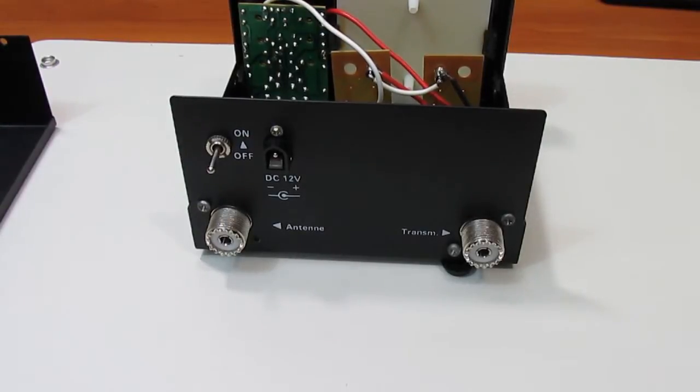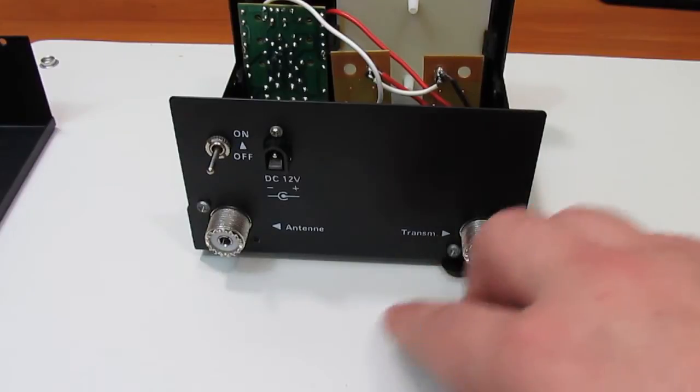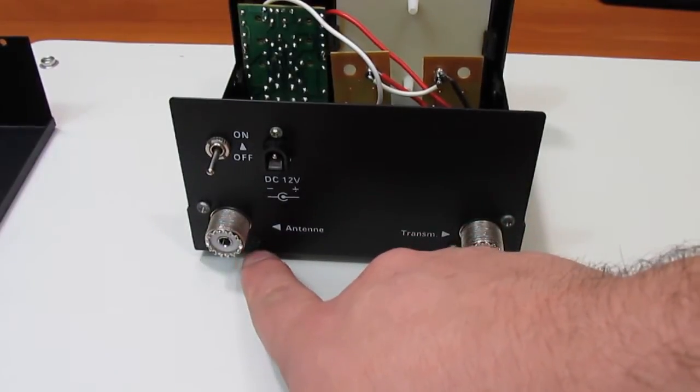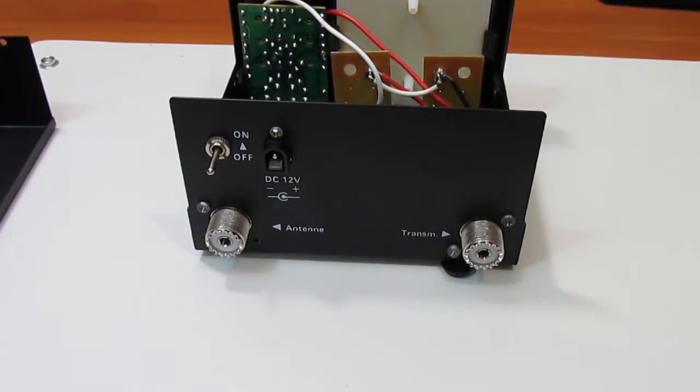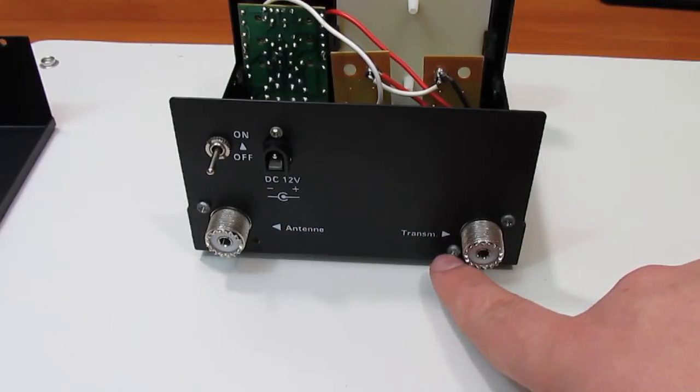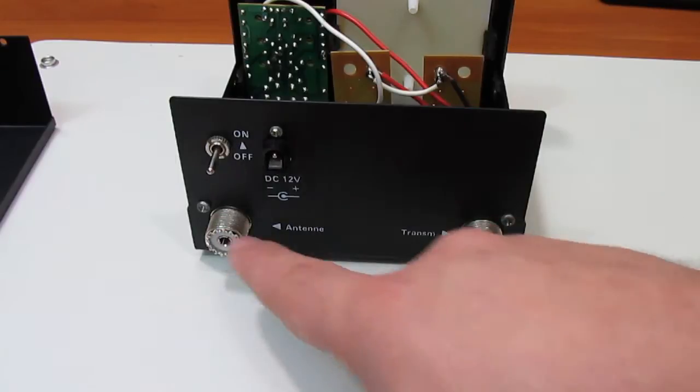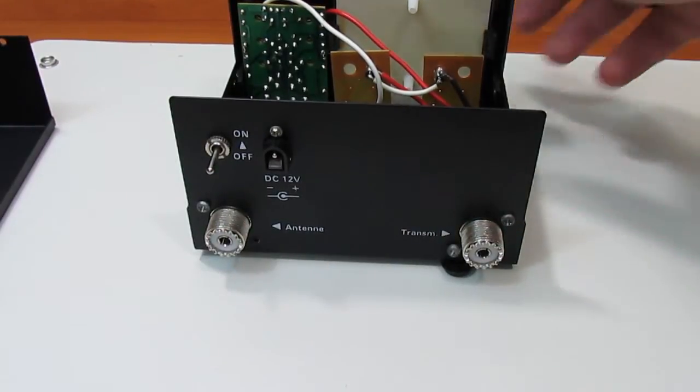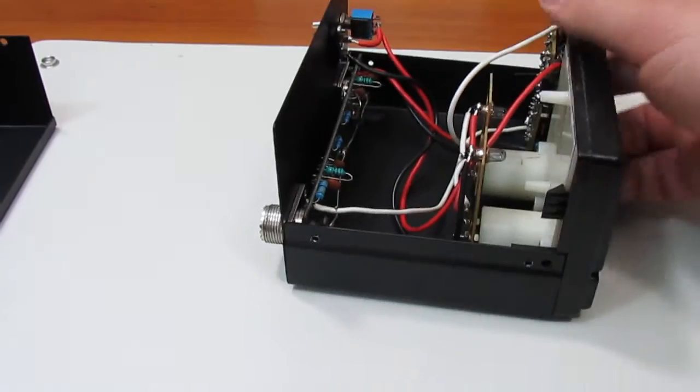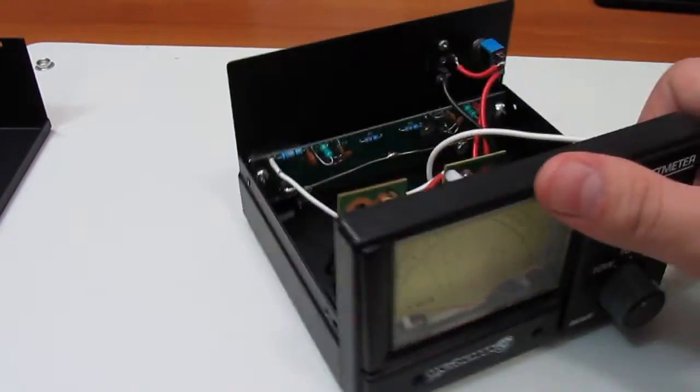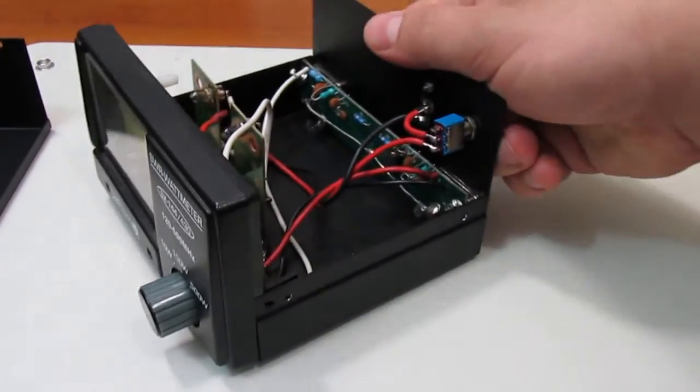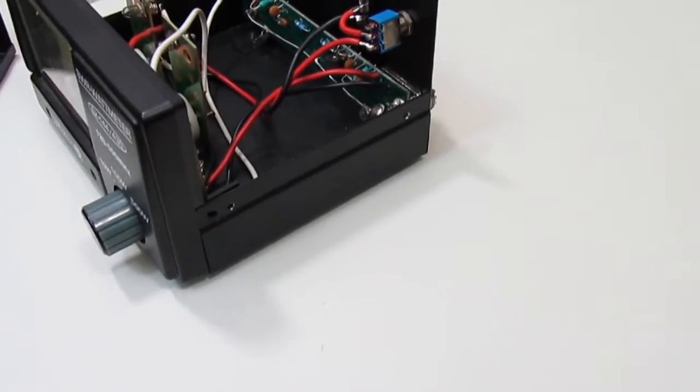So I opened it up. You see two screws right here, but one screw is missing. I got it like this. I think I bought it at a flea market or from a fellow ham. I don't remember where I got it.